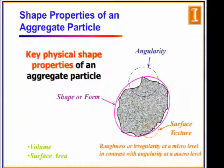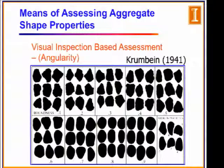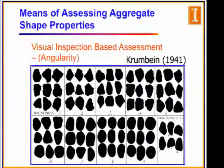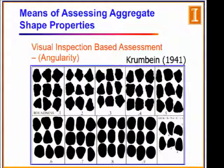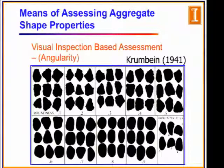When talking about angularity, we refer to irregularities at the macro level on the surface of the aggregate. Surface texture refers to micro-level roughness. Volume and surface area are also two important parameters of each single aggregate particle. There are several methods in the literature to differentiate crushed versus uncrushed or rough versus smooth rock. Visual methods have an operator inspect aggregate particles and assign numbers based on systems like Crombin's 1941 method. The first problem is that this method is very subjective — each person may have different judgment. We want more consistent, repeatable, and less subjective methods.